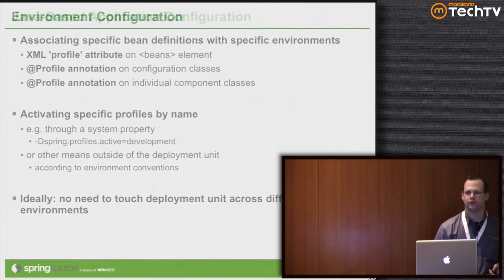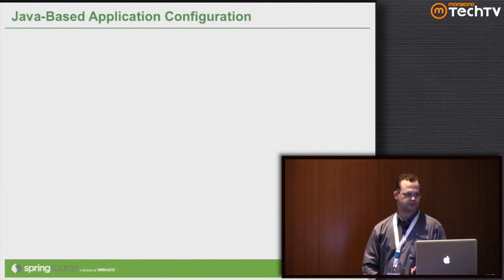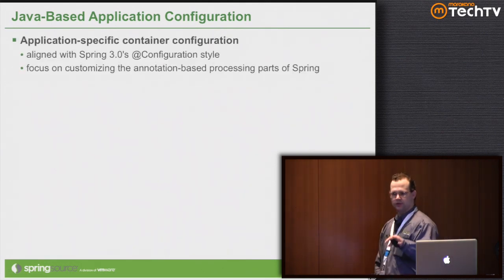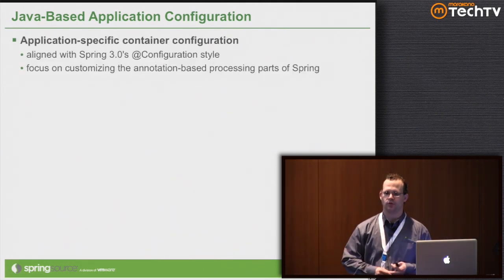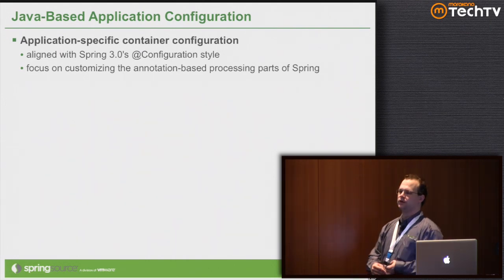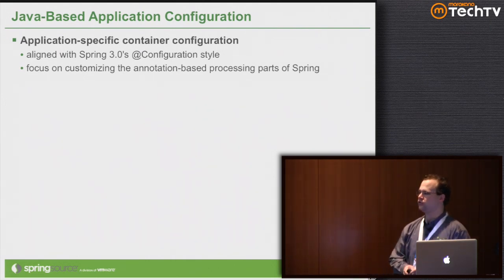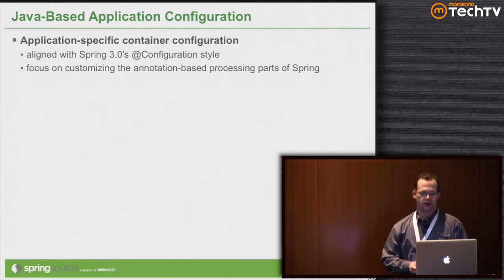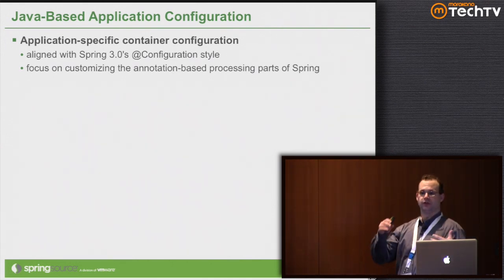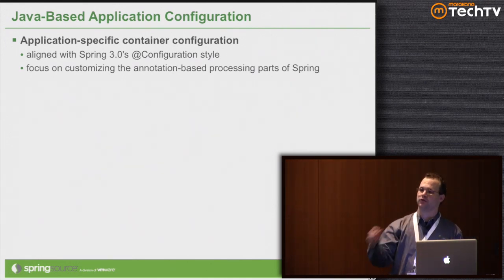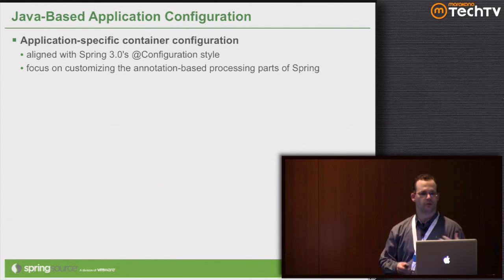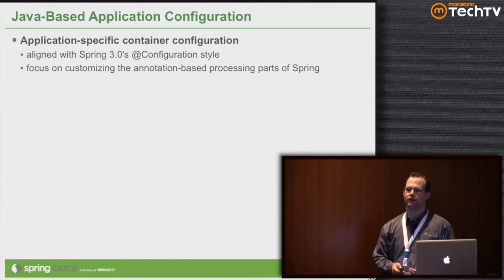Let's go through the Java-based configuration. Spring 3.0 debuted Java-based configuration, which we'd had support for in a separate project called Spring JavaConfig for many years. Now it's baked into the core of the framework. The idea is that you have XML for defining beans, and you can scatter annotations on your classes to have Spring collect and register them.